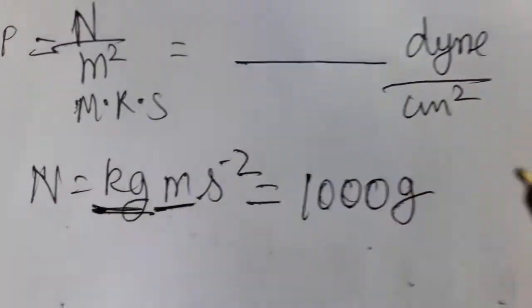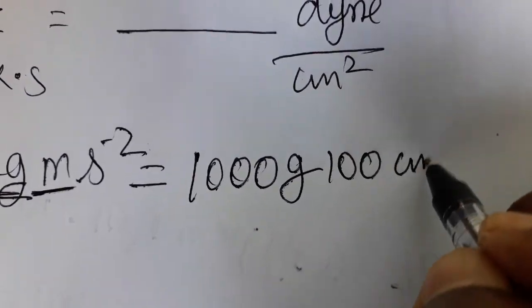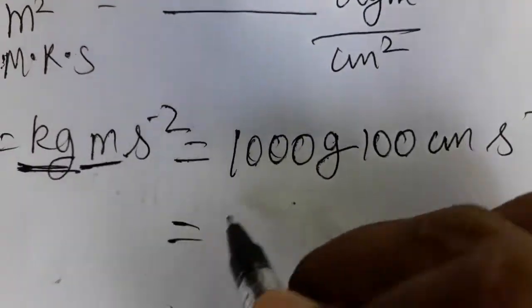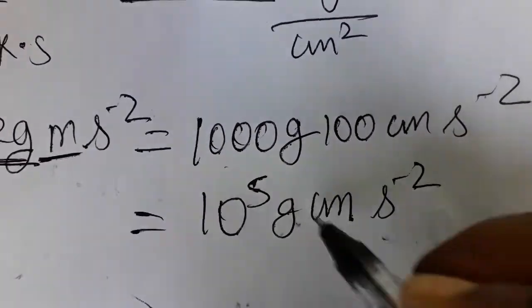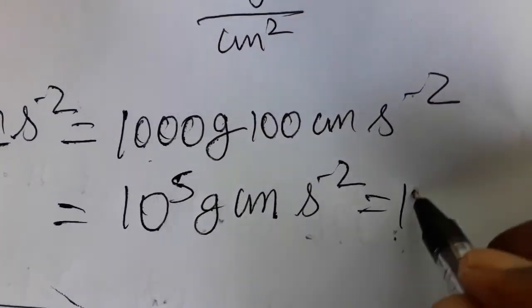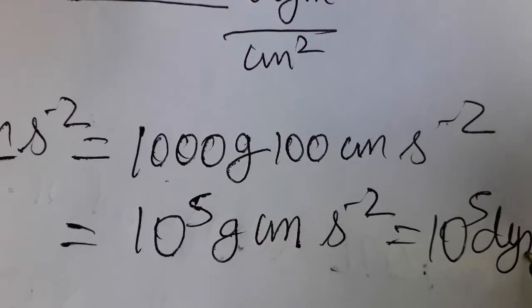One meter is a hundred centimeter, so second minus two. I'll get as ten to the power five grams centimeter second minus two. This everything I can take it as dyne, so ten to the power five dyne.